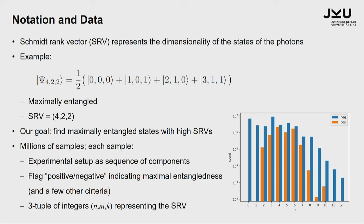We had some millions of examples. Each sample consisted of the experimental setup as input — a sequence of components like wave plates, holograms, and so on. In the end it had a target value, a supervisory signal, a flag which said positive or negative indicating whether or not it's maximally entangled, and a three-tuple vector that says the Schmidt rank N, M, K.